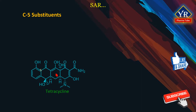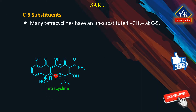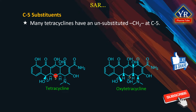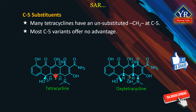C5 substituents. Many naturally occurring antibacterial tetracyclines have an unsubstituted methylene moiety at the C5 position. However, oxytetracycline, the second tetracycline isolated, contains a C5 alpha hydroxyl group. Oxytetracycline is not only a derivative but the functionality at the C5 position has been chemically modified to prepare some semi-synthetic tetracyclines. Unfortunately, most C5 variants offer no advantage over oxytetracycline or the C5 unsubstituted tetracyclines, for example tetracycline itself, in terms of enhancing or expanding upon the antibacterial spectrum.